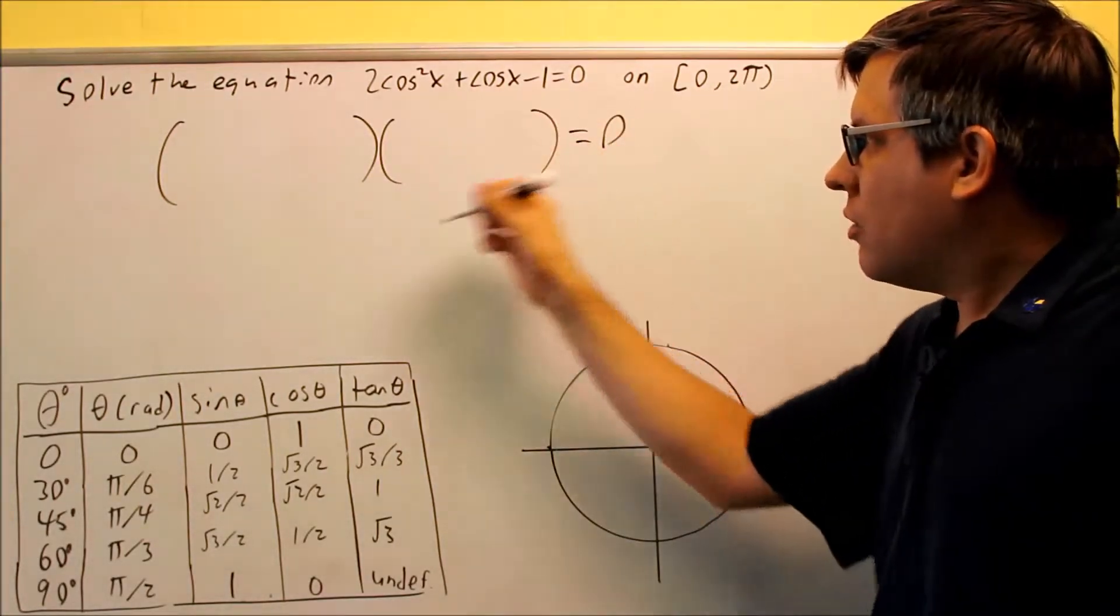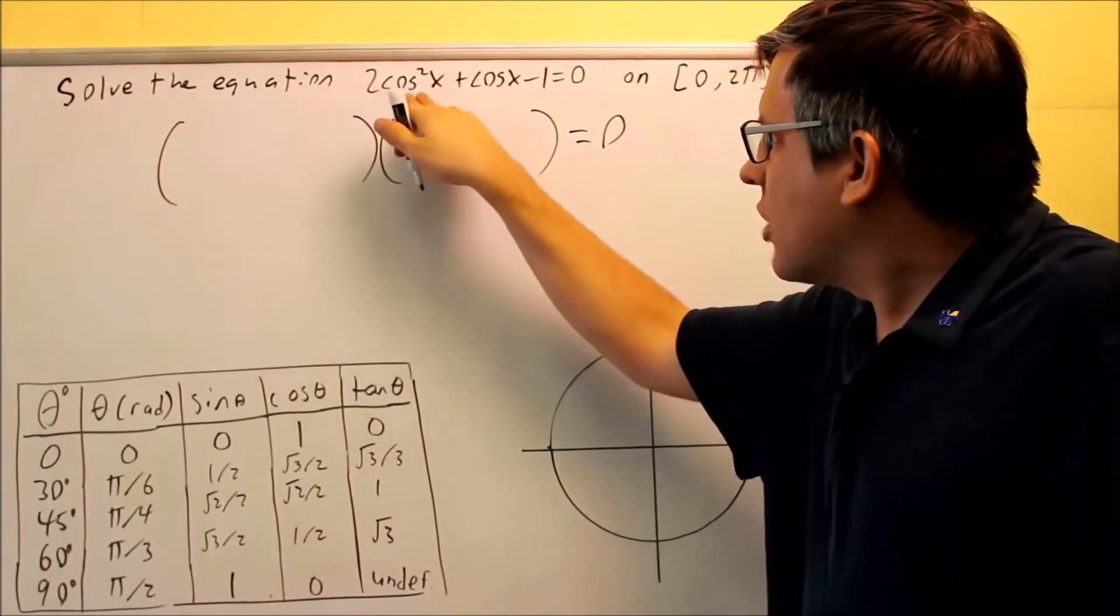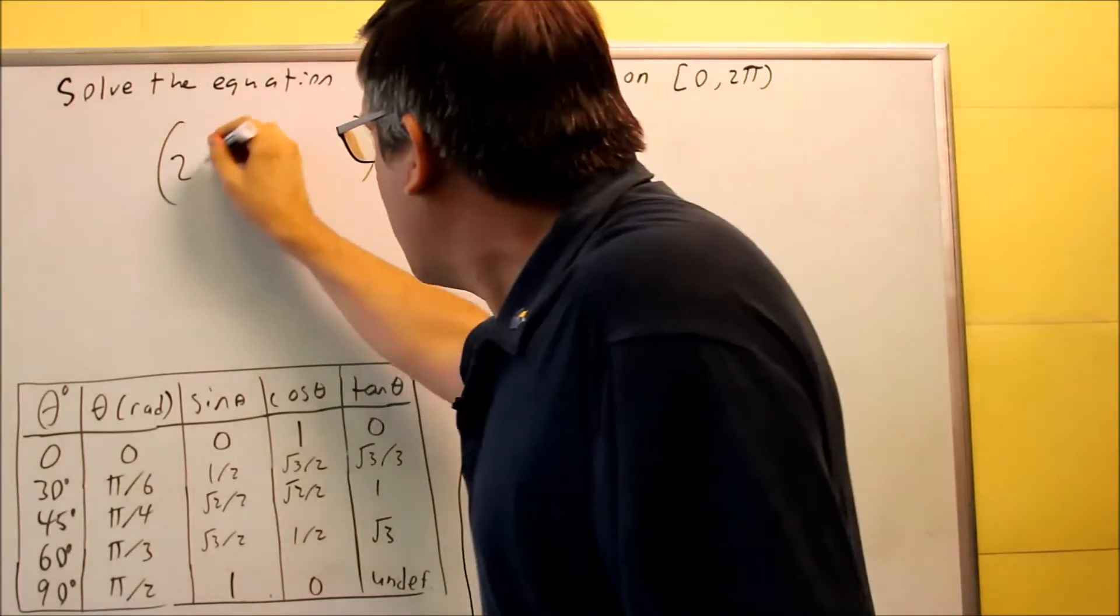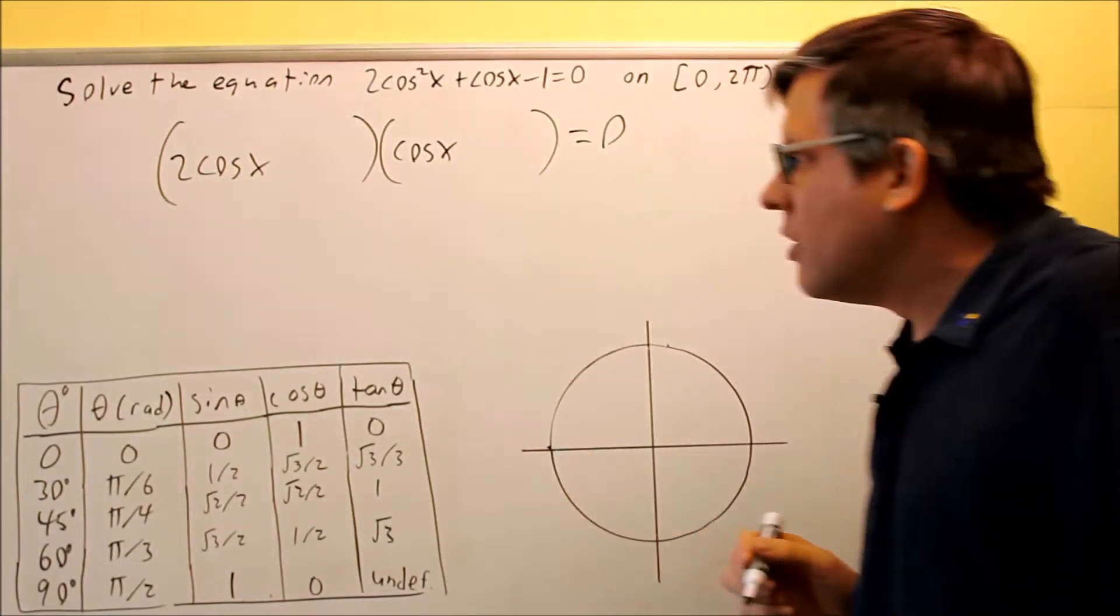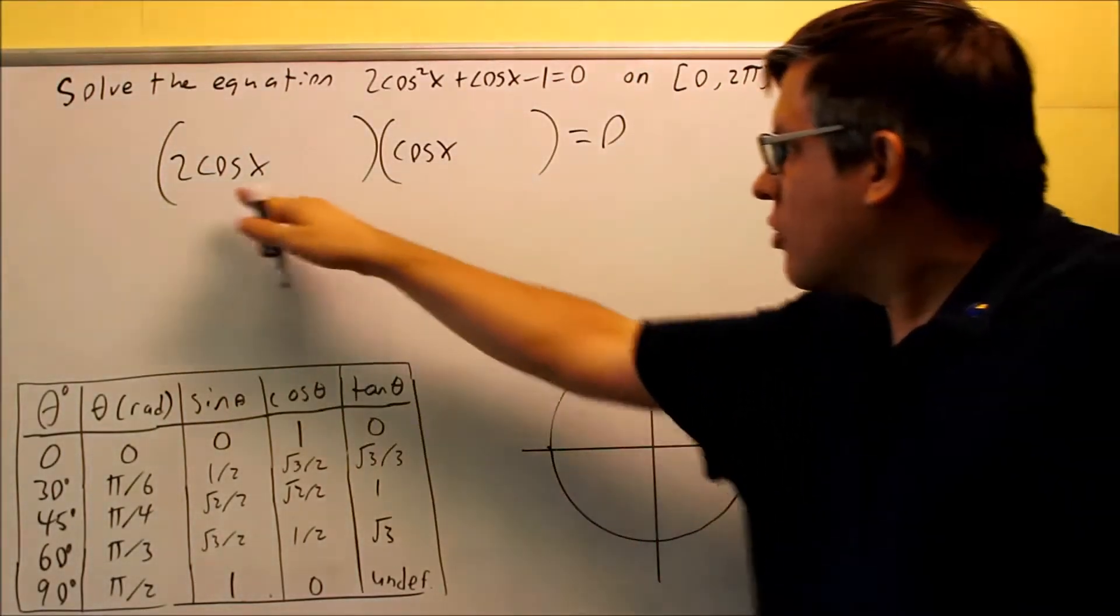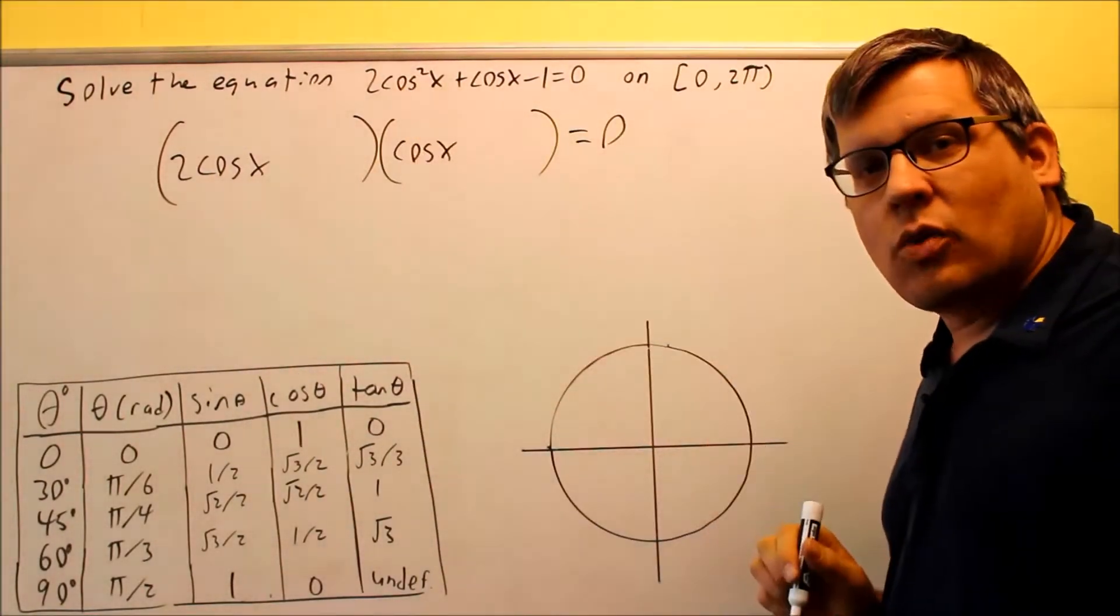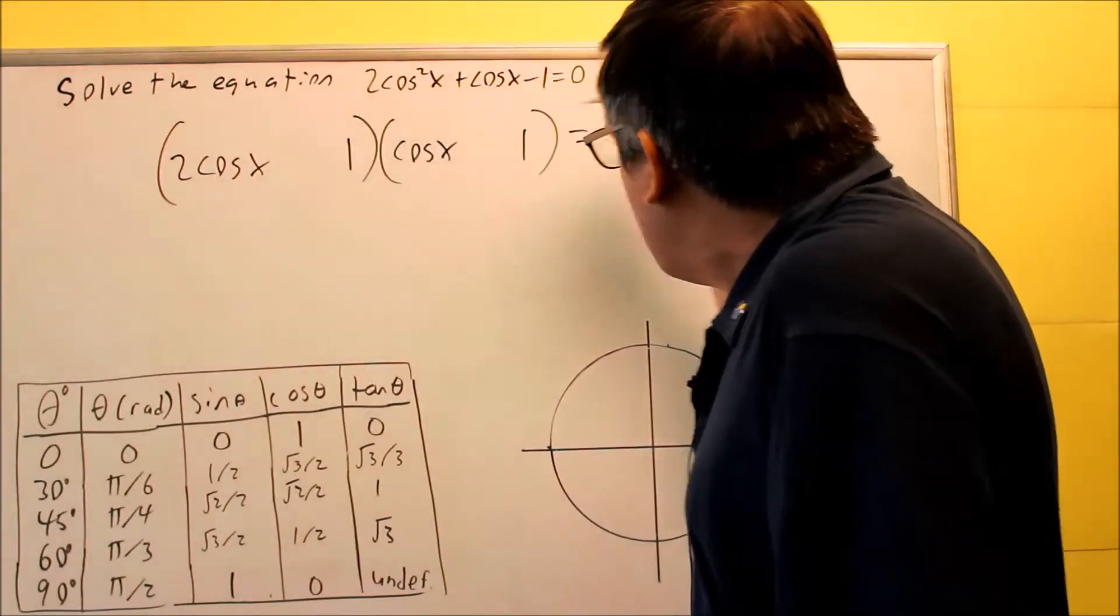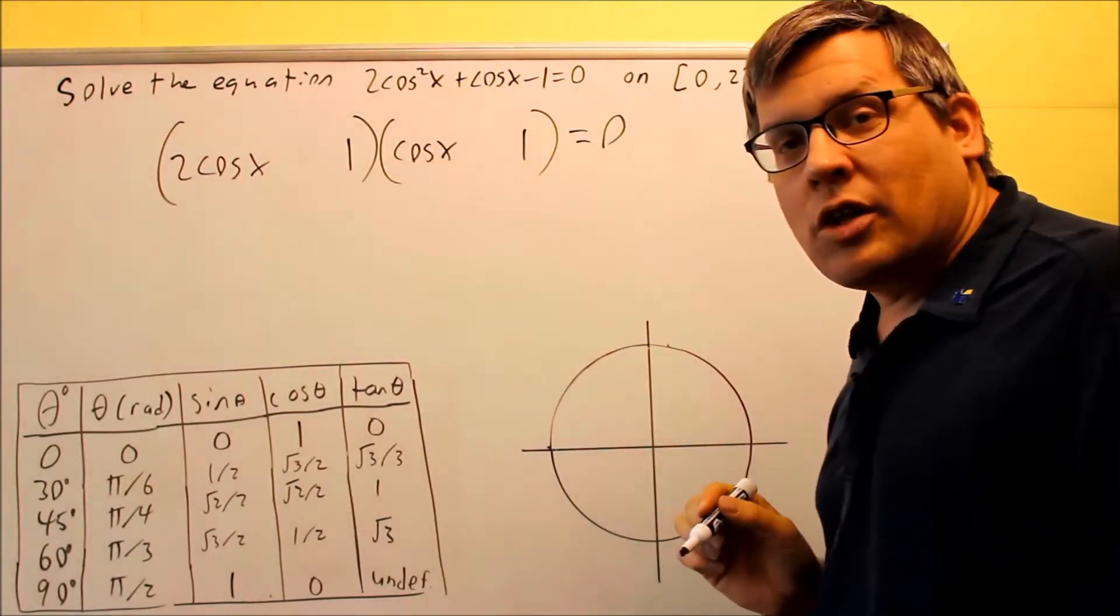Let's do this one factoring by trial and error. First of all, the cosine, I want to get two cosine squared. Now, the only way that I can do that is if I multiply two cosine times cosine, there's really no other way of writing that. That would get me the two cosine squared. On the end, I have a one, so I'll put ones in for both of those. That's the only factors of one.